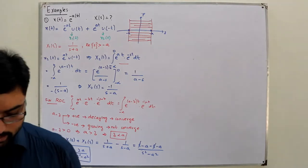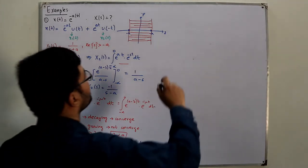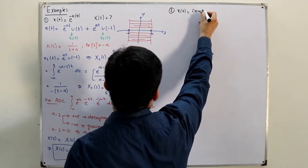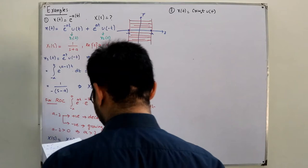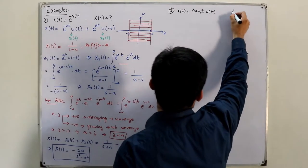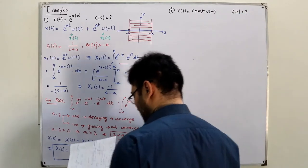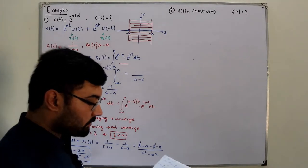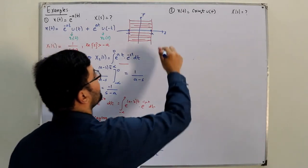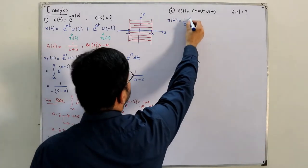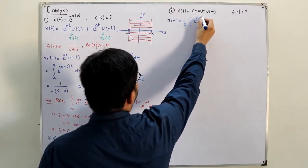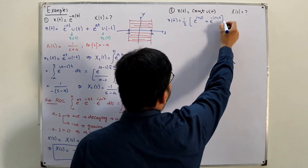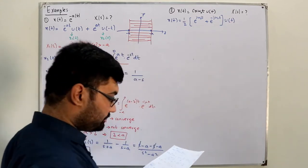Example number two: x(t) = cos(ω₀t)·u(t), and X(s) is unknown. For simplicity we use Euler's relation: cos(ω₀t) = (1/2)[e^(jω₀t) + e^(-jω₀t)], so x(t) = (1/2)e^(jω₀t)u(t) + (1/2)e^(-jω₀t)u(t).